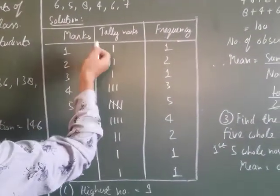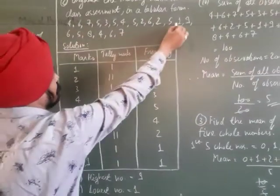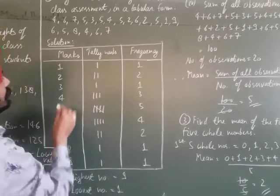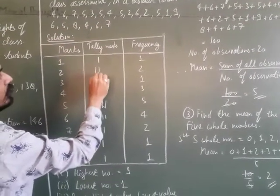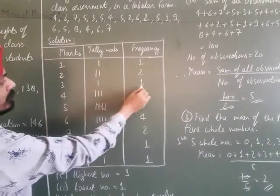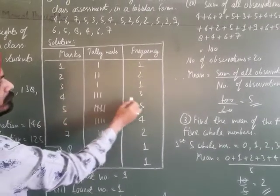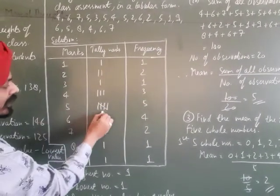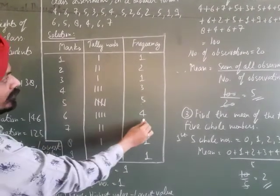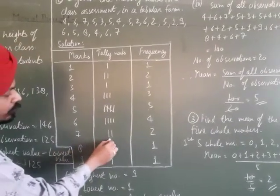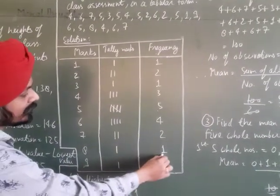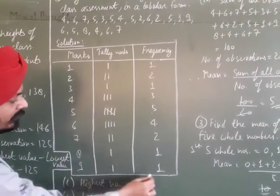For mark 1: it appears 1 time, so frequency is 1. Mark 2 appears 2 times, frequency is 2. Mark 3 appears 1 time, frequency is 1. Mark 4 appears 3 times, frequency is 3. Mark 5 appears 5 times, frequency is 5. Mark 6 appears 4 times, frequency is 4. Mark 7 appears 2 times, frequency is 2. Mark 8 appears 1 time, frequency is 1. Mark 9 appears 1 time, frequency is 1.